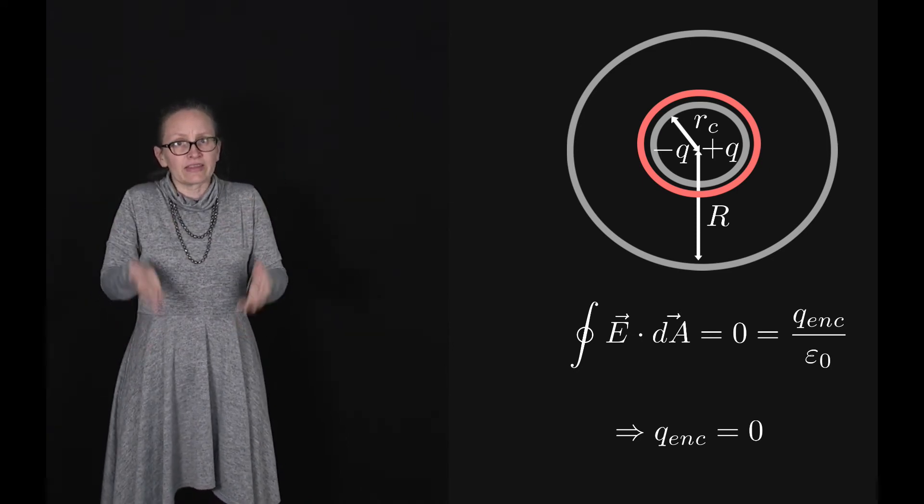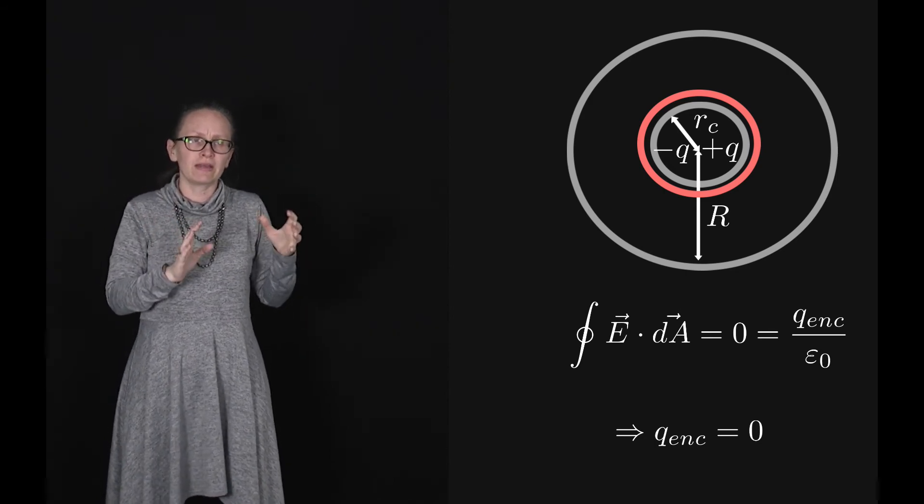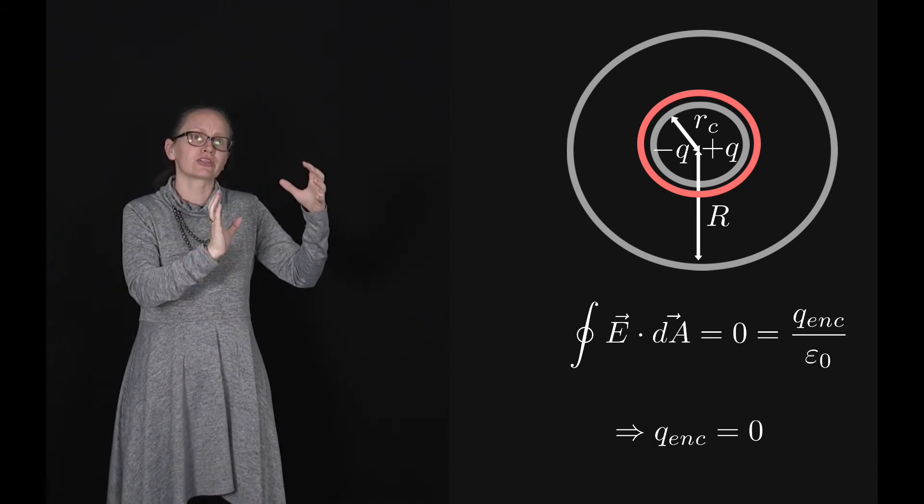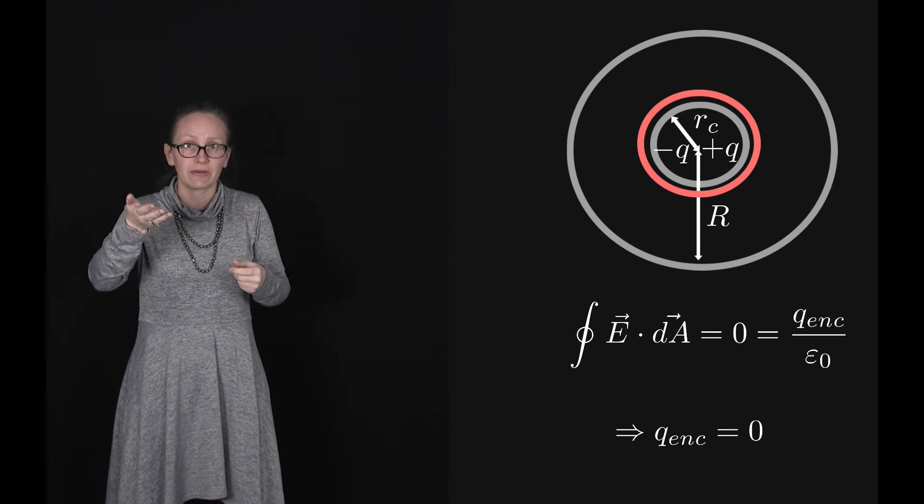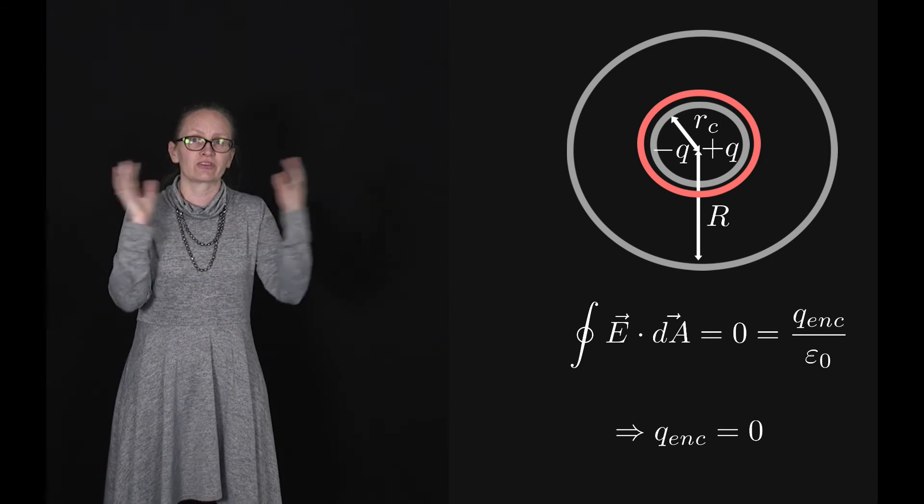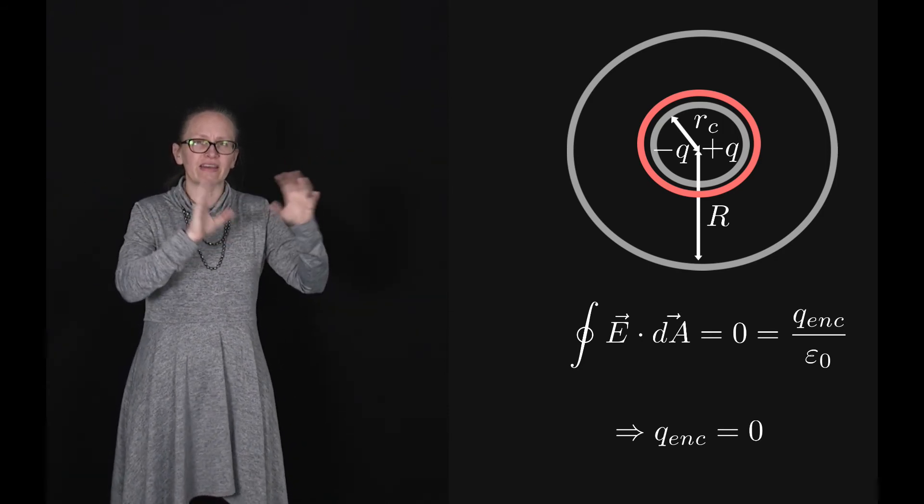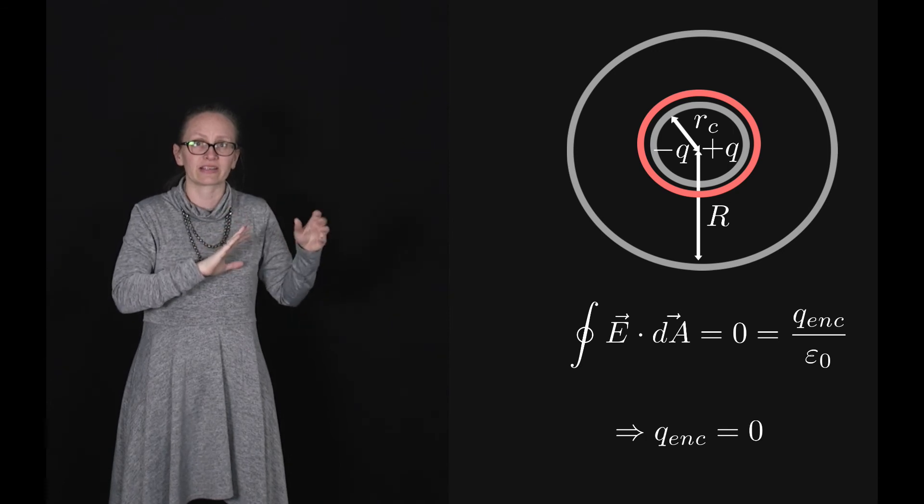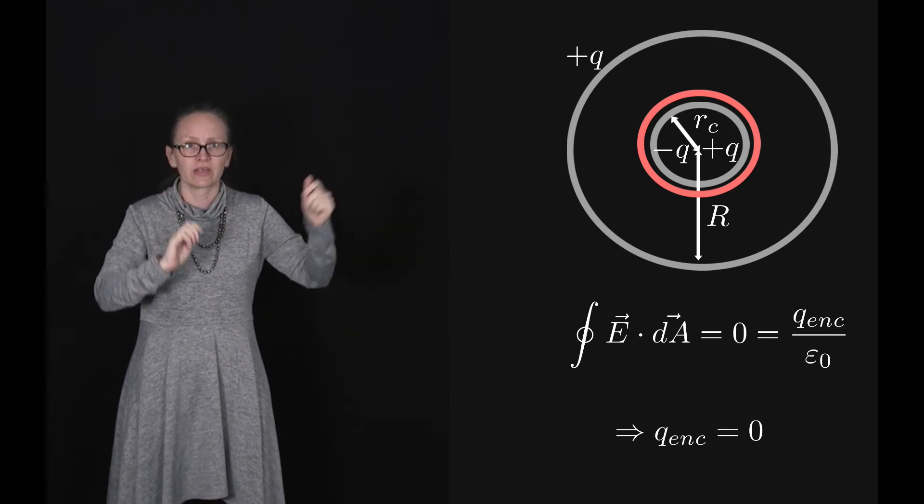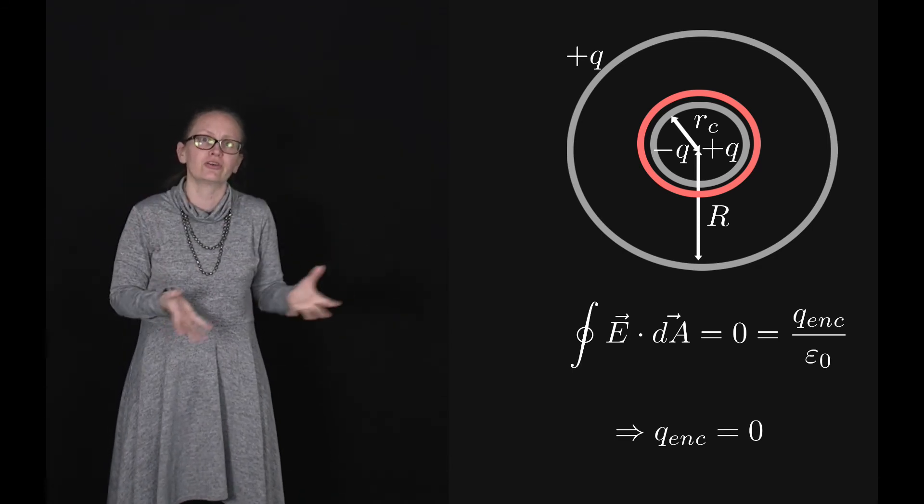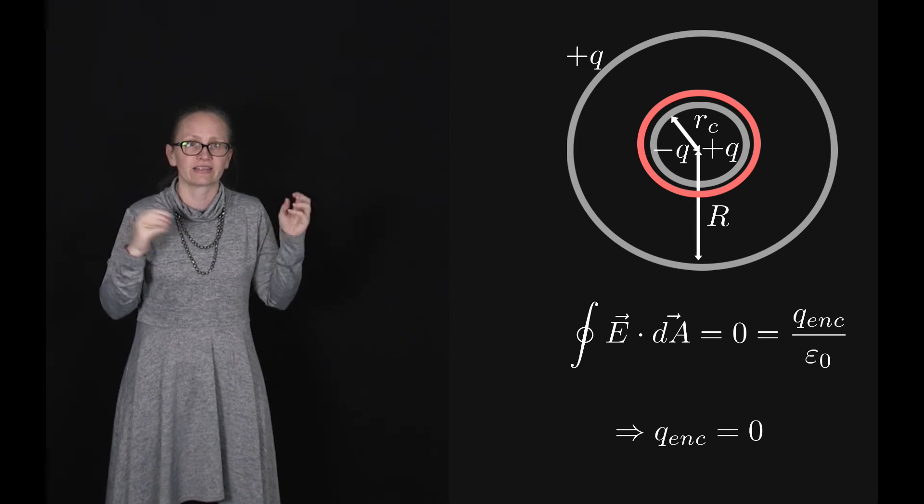At the start we said that our conducting sphere was neutral. So if we have a charge of minus Q somewhere then there must be an equal and opposite charge plus Q somewhere as well. We've already said that the electric field everywhere within the conductor is zero, so we can't have these spread throughout our conductor. They must be on the outer surface of the conductor. This tells us that we have a charge of plus Q spread evenly around the outer edge of that conductor.